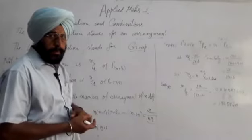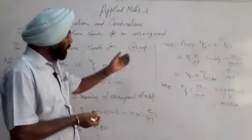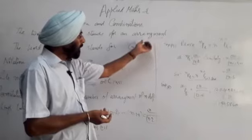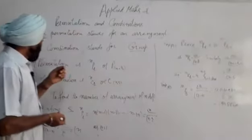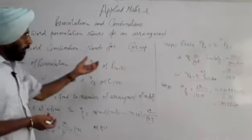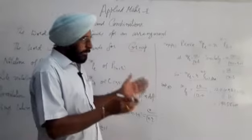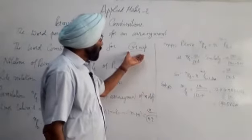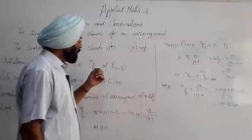You may arrange your clothes in this way, in this shirt and pants. This is arrangement. And combination stands for group - making groups of ten-ten or five-five, that is combination.